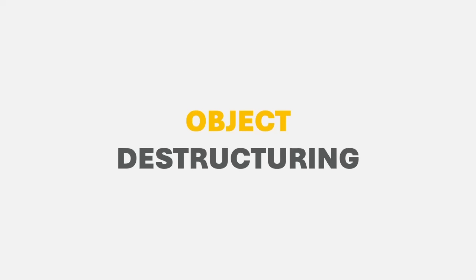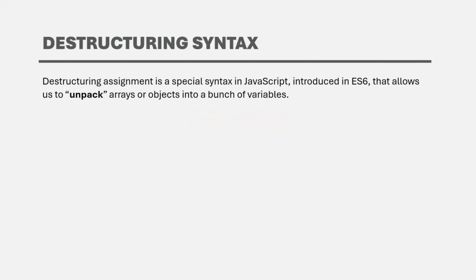In the last lecture, we learned about destructuring syntax and how we can destructure an array. We also learned that we can apply destructuring syntax on objects. So in this lecture, we are going to learn about object destructuring. Destructuring syntax allows us to unpack arrays or objects into a bunch of variables, and it was introduced in ES6 version of JavaScript.